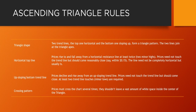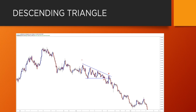The descending triangle is the opposite of the ascending triangle. We're going to have a down-sloping trend line formed by lower highs, and a horizontal support line formed by buy orders that make the market stop from going below. When those buy orders are exhausted, we see the breakout happening. In this example we actually had a break, a retest, and then continuation. As long as the retest did not break any of the previous highs, this is still a valid triangle.